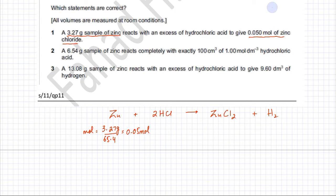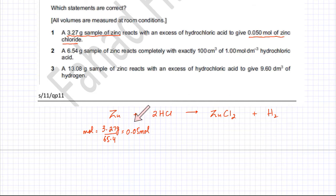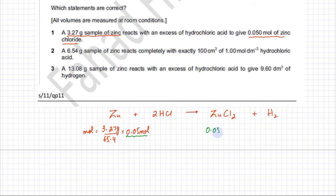Looking at the ratio, one zinc produces one zinc chloride, so the amounts are exactly the same — a 1:1 ratio. This means if you have 0.05 moles of zinc, then 0.05 moles of zinc chloride would be produced, because it's being produced in the same ratio according to the equation. Therefore, option number 1 is the correct option.